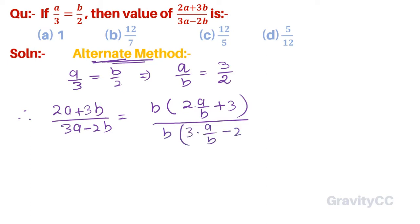So b cancels, and this is equal to (2 × 3/2 + 3)/(3 × 3/2 - 2).